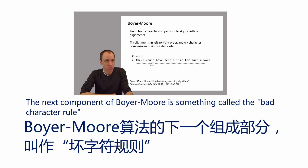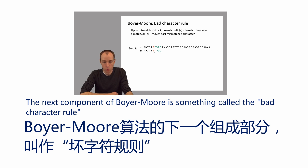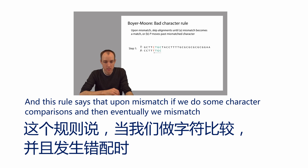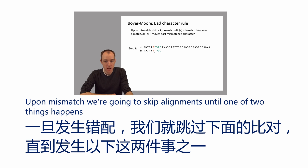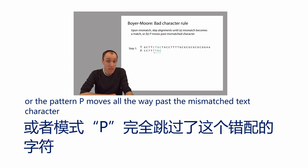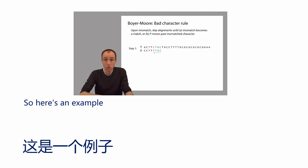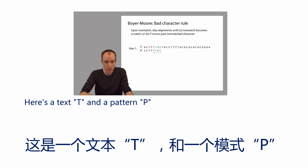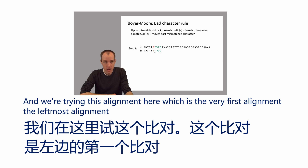The next component of Boyer-Moore is something called the Bad Character Rule. This rule says that upon mismatch — if we do some character comparisons and eventually mismatch — we're going to skip alignments until one of two things happens: either the mismatch becomes a match, or the pattern P moves all the way past the mismatched text character. Here's an example with a text T and a pattern P, trying the very first, leftmost alignment.